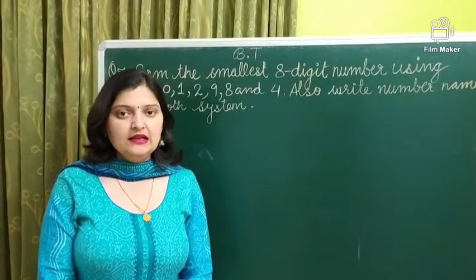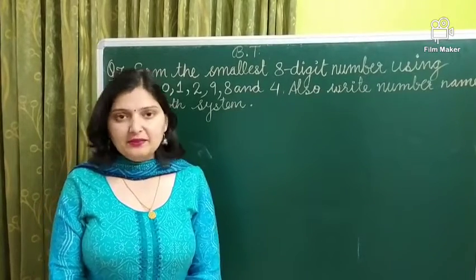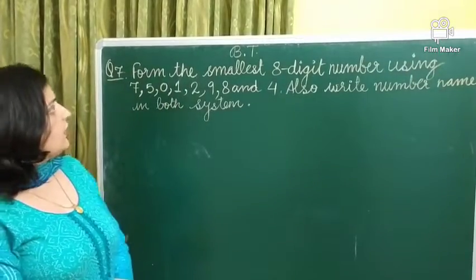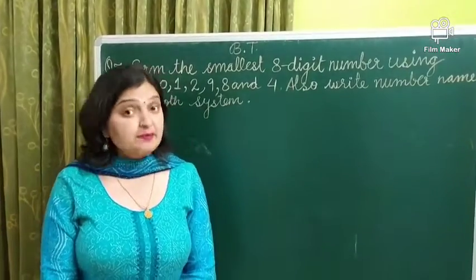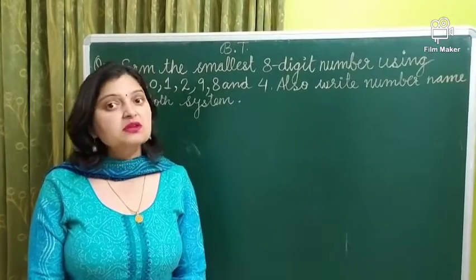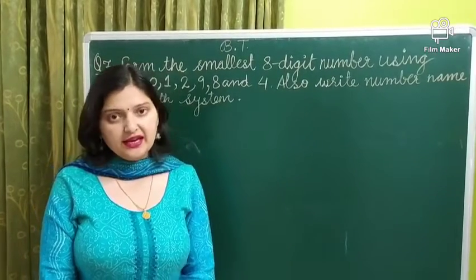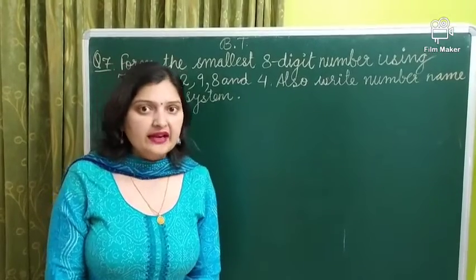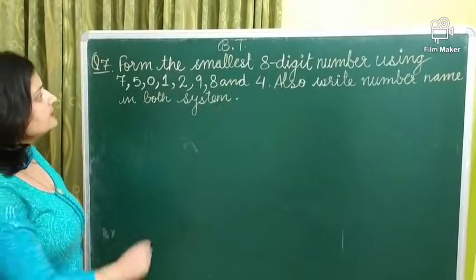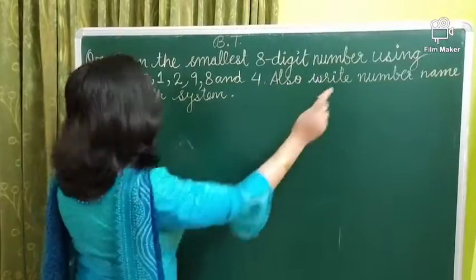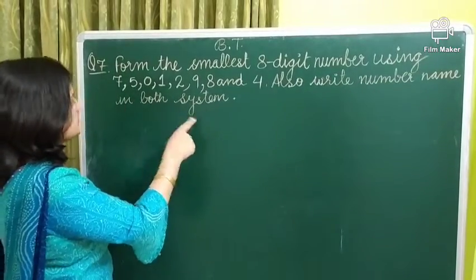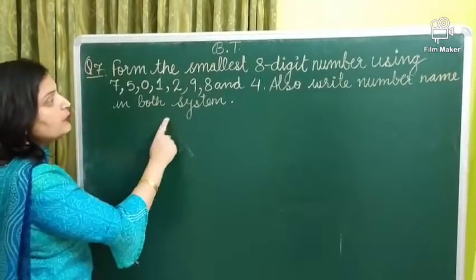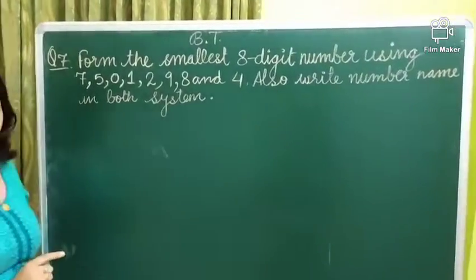Good morning everybody. Today once again I am here with you and today I have taken question number 7 of brain teaser. Isse peechhe ke jitne bhi questions hain, jitne bhi worksheet hain, hum already kar chukhe hain. Toh ab hum start karate hain apna next question and the question is form the smallest 8 digit number using the digits. Digits are given to you. Also type number name in both system.